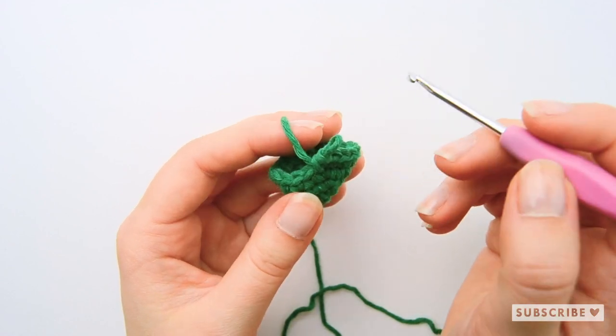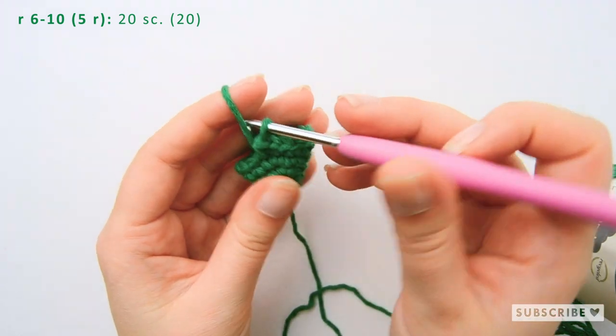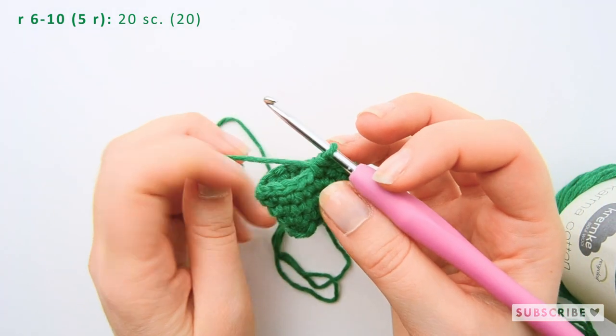We are going to crochet one single crochet in each stitch, so 20 stitches on each row.